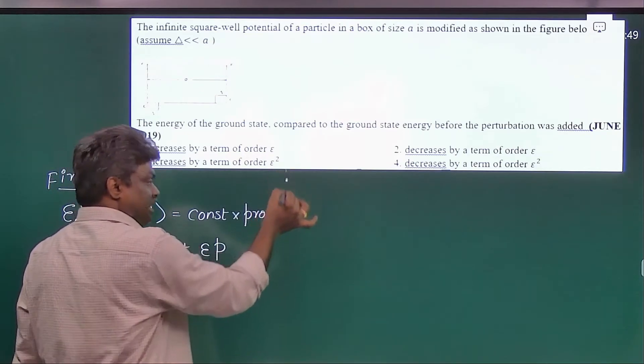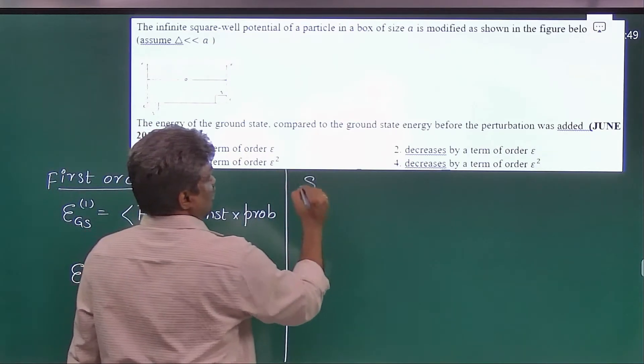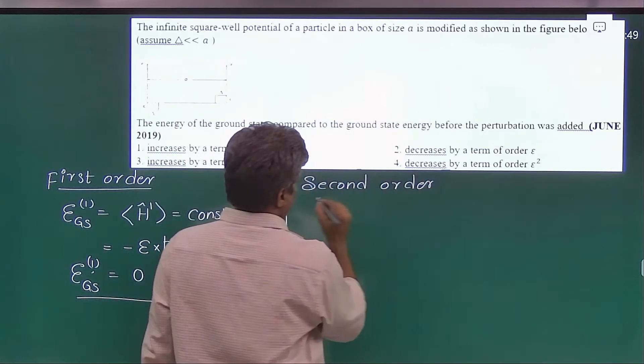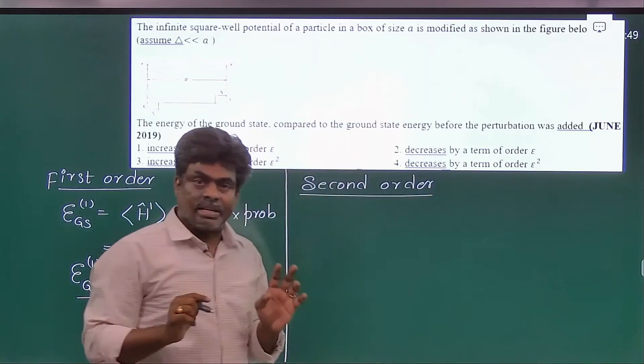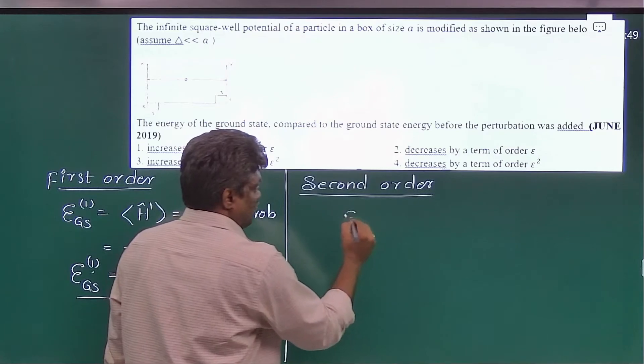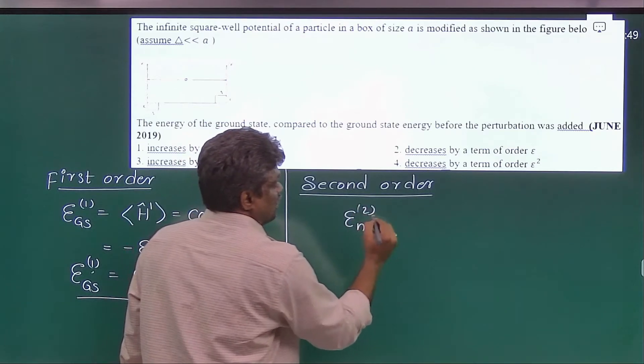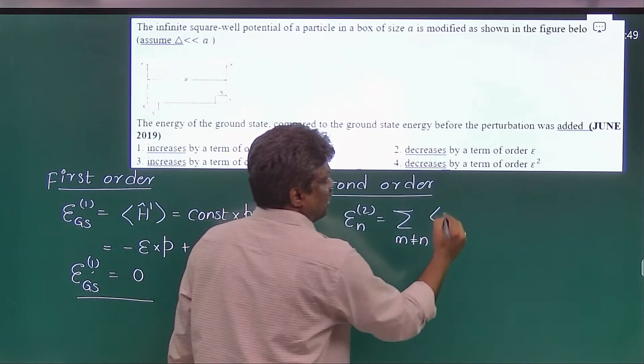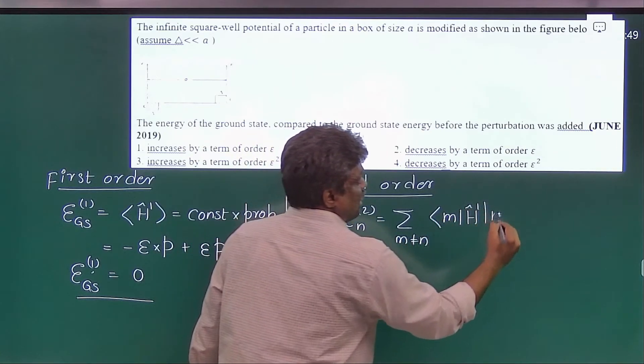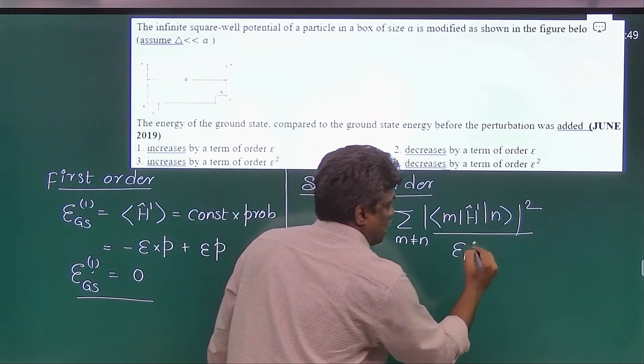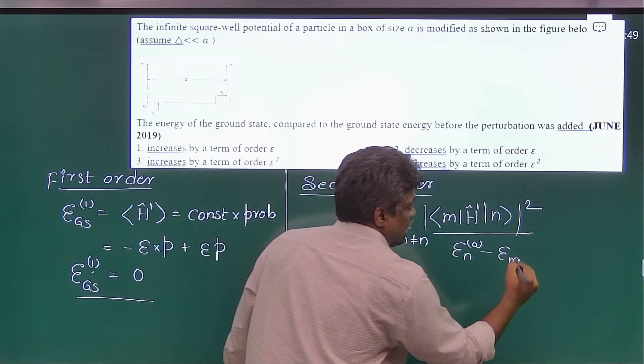Second order. Second order correction to the energy. Here you need not find any second order correction, just write the formula first. Okay, the formula: E_n^(2) is a summation over m not equal to n, bra m H prime ket n naught squared divided by E_n naught minus E_m naught.